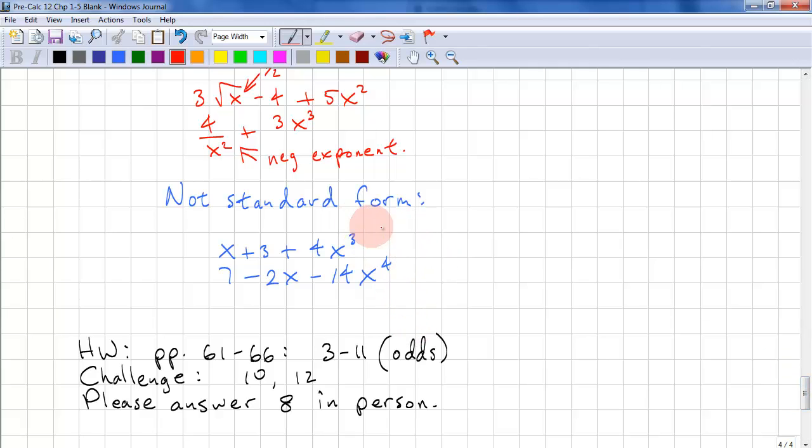And here, this is a polynomial expression, but it's not in standard form. We have to rewrite this as 4x^3 + x + 3. This one is -14x^4 - 2x + 7. And that completes this lesson.